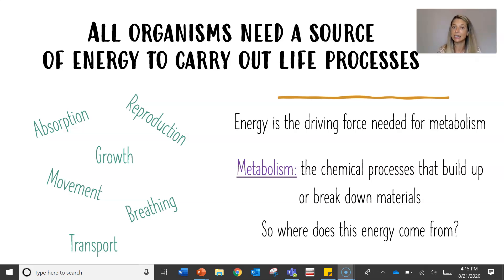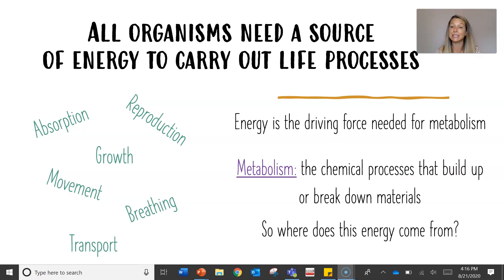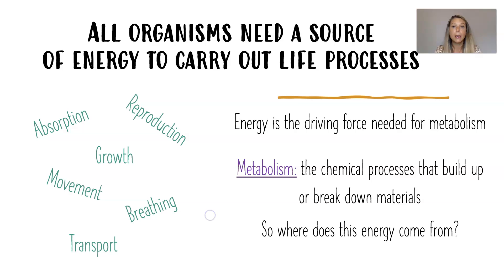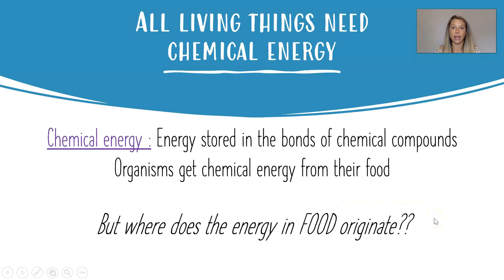Energy is the driving force needed for what we call metabolism. Metabolism is defined as all of the chemical processes taking place inside an organism — the processes building up materials and breaking down materials. All of those processes together make up an organism's metabolism. If I asked where your energy comes from, you'd probably say your food. But organisms get their food in slightly different ways. All living things need chemical energy — the energy stored in the bonds of chemical compounds. We get our chemical energy from food, but where does the energy in your food ultimately come from?